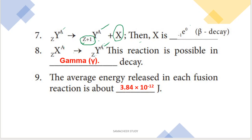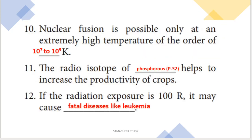Next: the average energy released in each fusion reaction is 3.84 into 10 power minus 12 joules. Nuclear fusion is possible only at an extremely high temperature of the order of 10 power 7 to 10 power 9 Kelvin.